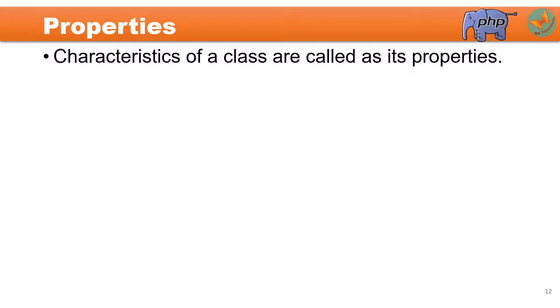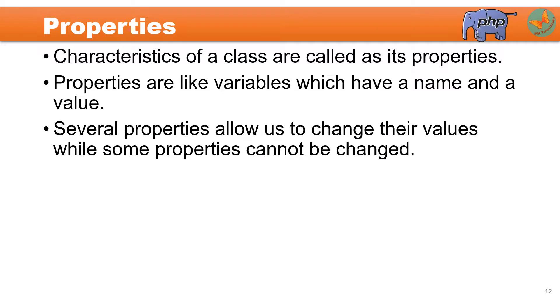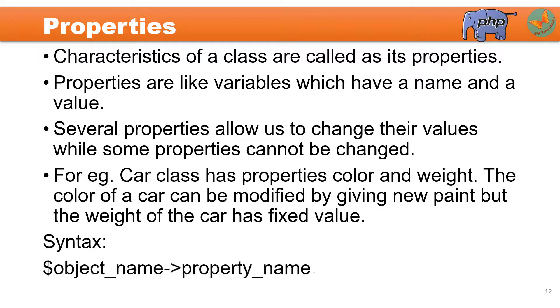Now let us try to understand what are properties. Properties are nothing but characteristics, and these are represented within a class by some variables which have a name as well as a value. There are many properties in a particular class. You could change the values of some properties while some properties cannot be changed. For example, a car could have color and weight — the color can be modified if you give it new paint, but the weight is a fixed value so it cannot be modified. The syntax to access a property is: dollar object name, arrow operator, property name.